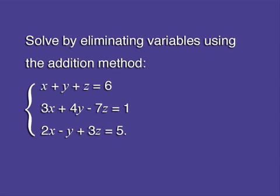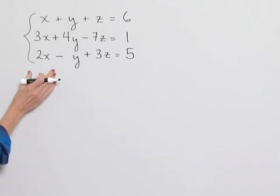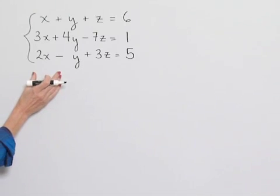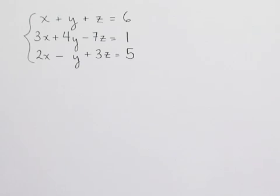Solve by eliminating variables using the addition method. We have a three equation, three unknown system of equations. Our first equation is x plus y plus z equals six. Second equation: three x plus four y minus seven z equals one. Third equation: two x minus y plus three z equals five.